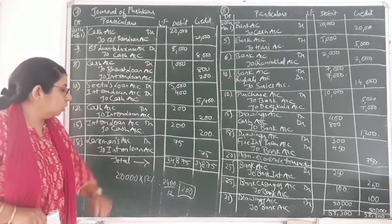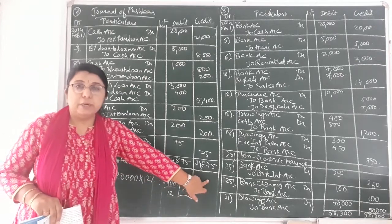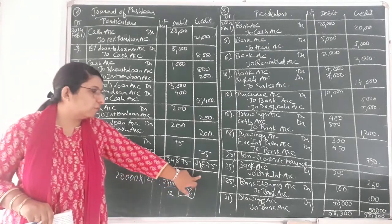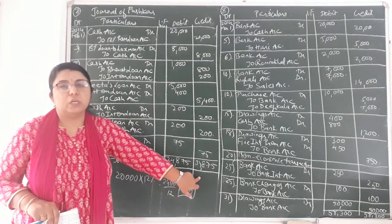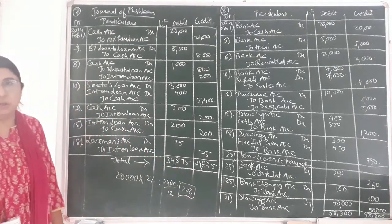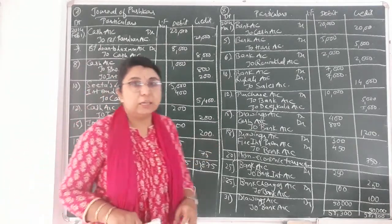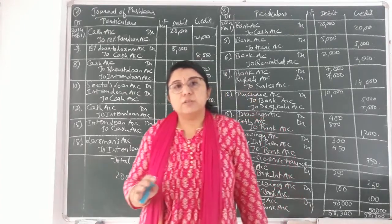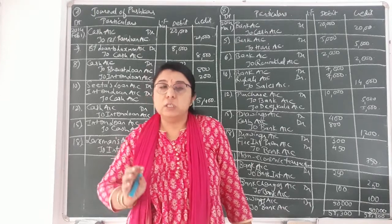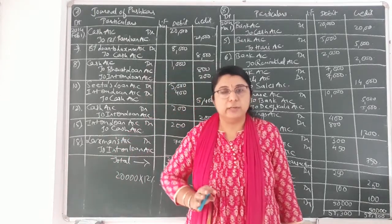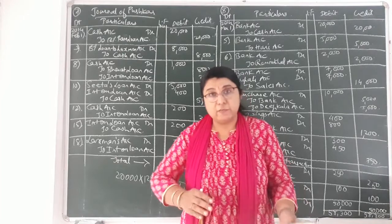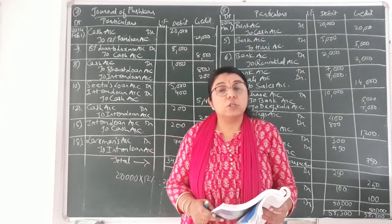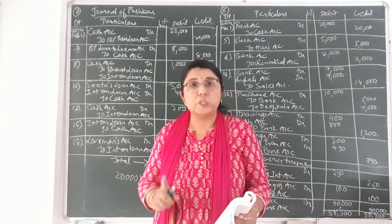After completing all journal entries, we do the total of debit and credit sides. Both sides come equal: 34,875 debit and 34,875 credit. In this way you have to write the journal entries. Next, moving on to question number 8 of your textbook, that is transactions of bank — all journal entries in this sum are related to bank transactions. You can verify illustration number 6 of your textbook, which is similar to question number 8.